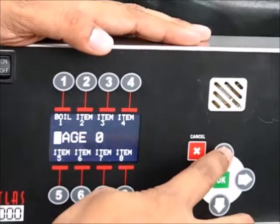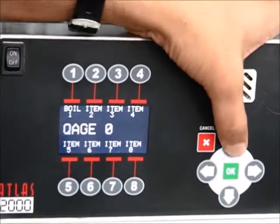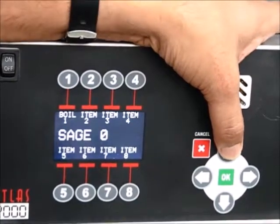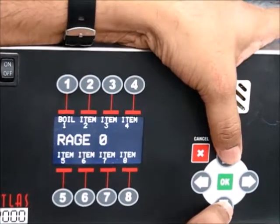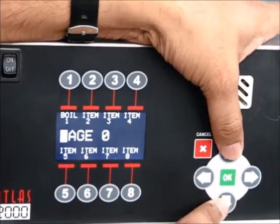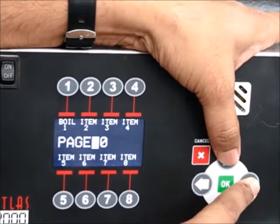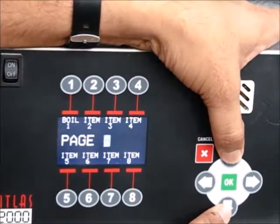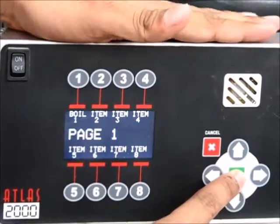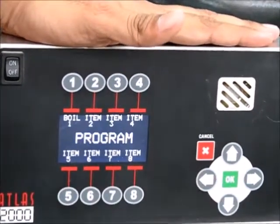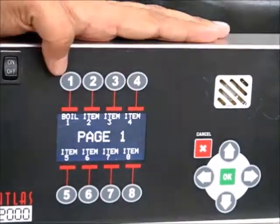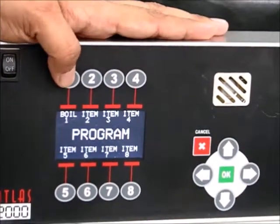You can now begin editing the page name. Press the up or down arrow button to select a new character. Press the left or right arrow button to move the cursor to the next character. Press OK to save the changes. We will change this page to page 1.